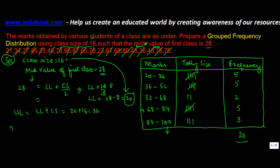So the only thing which we needed to know here was - I'll just write it down - mid value equals lower limit plus class size divided by 2, or upper limit minus class size divided by 2.